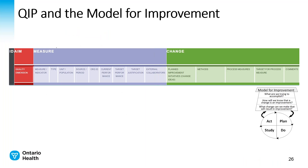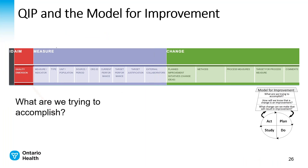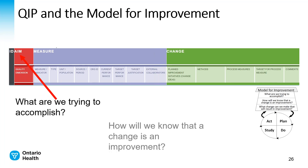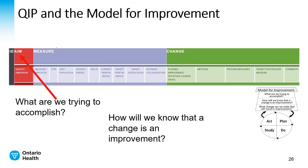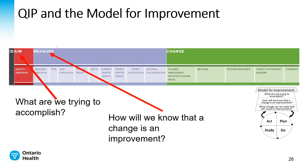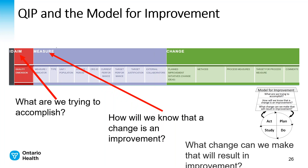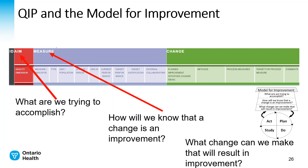Here's what it looks like on the work plan. What are we trying to accomplish? The aim section, shown in red. How will we know that change is an improvement? The measure section. What change can we make that will result in improvement? The green pane section.